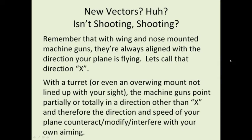That's not the case with a turret or an overwing mount like the Lewis gun or the Becker 20mm. The machine guns point partially or totally in a direction other than x, and therefore, as your muzzle of your gun is doing one thing, your plane relative to that can be doing something entirely different in terms of direction of motion. And that will counteract or interfere with your own aim as you go.